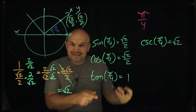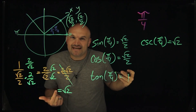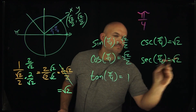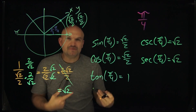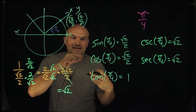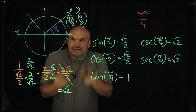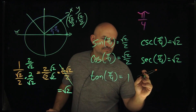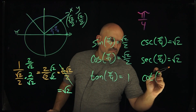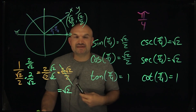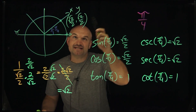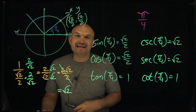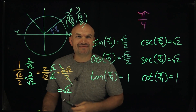The cool thing is secant is going to be exactly the same — also square root of 2. And cotangent is just the x over the y coordinate. Since they're exactly the same, cotangent is also going to be 1. This one wasn't too bad because my x and y coordinates were exactly the same. But what would it look like if they were not? That's coming up in the next video.